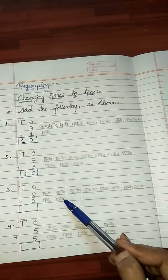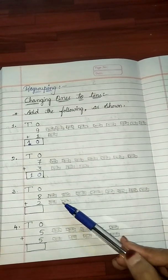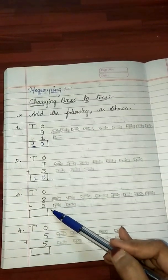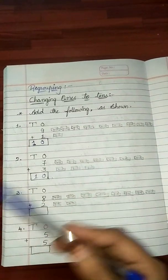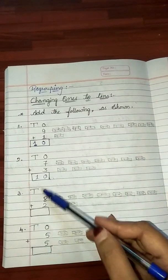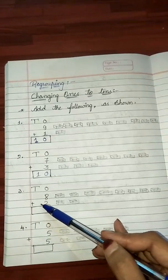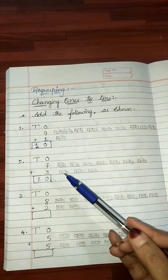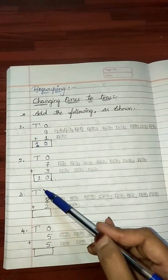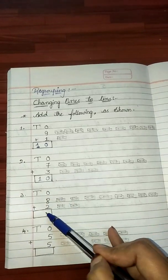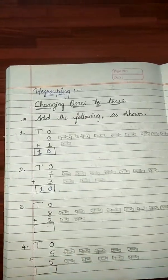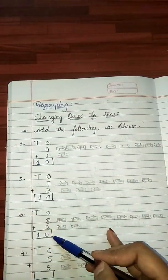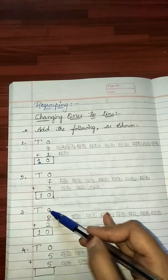The biggest number that can be written in the ones place is only 9. Thus, we cannot write 10 in the ones column. So, we write 10 ones as 1 ten and 0 ones. 1 ten and 0 ones.